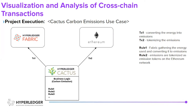In the use case shown here, we have a permissioned network — Hyperledger Fabric — gathering the energy used and converting it to emissions. These emissions are then tokenized as emission tokens on the public Ethereum network, so that you could trade emissions against allowances or offsets, or pay for emissions reductions. Practically, when rule one is triggered, Cactus creates the first transaction converting the energy into emissions, directed to Fabric. When the second rule is triggered, Cactus creates the second transaction tokenizing the emissions, which is directed to Ethereum.